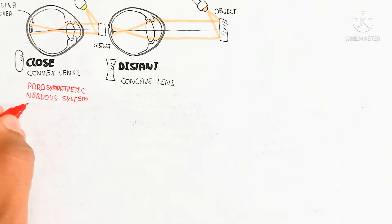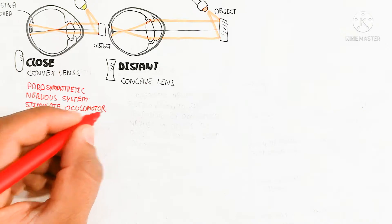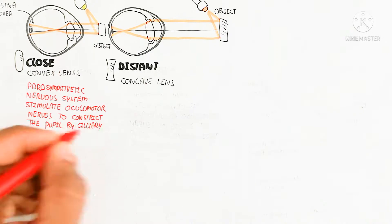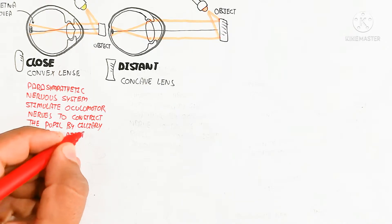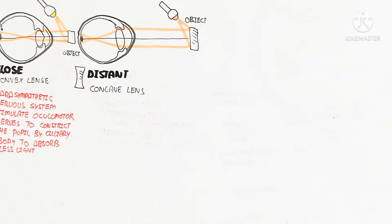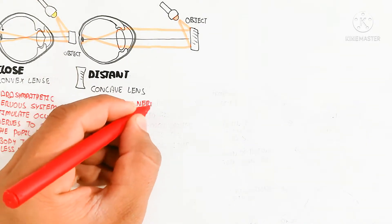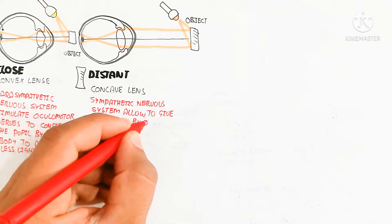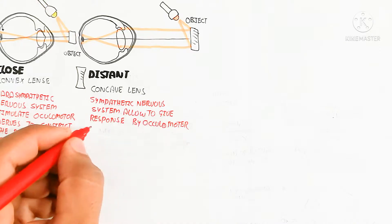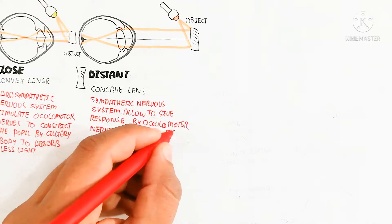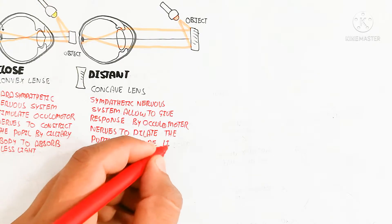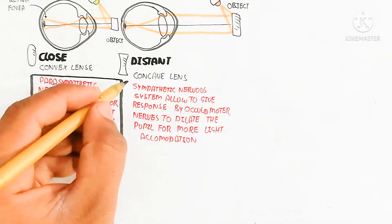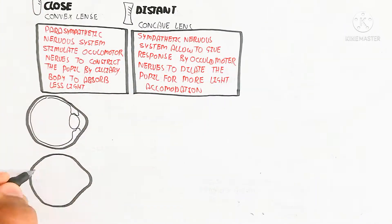For close distance, there is no dilation of the pupil and the lens will constrict. The parasympathetic nervous system stimulates the oculomotor nerve to constrict the pupil via the ciliary body to absorb less light. The sympathetic nervous system gives a response through oculomotor nerves to dilate the pupil for more light accommodation, making the lens convex and allowing more light for efficient image formation.